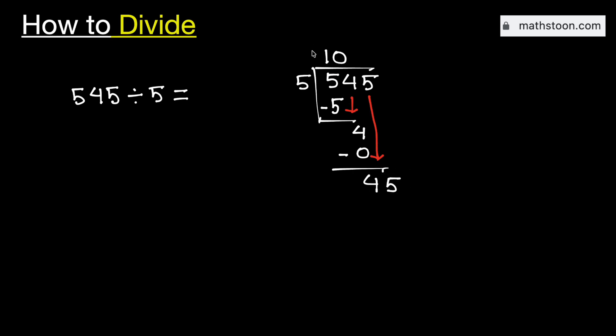Now, we know that 5 times 9 is equal to 45. Subtract, we get 0.